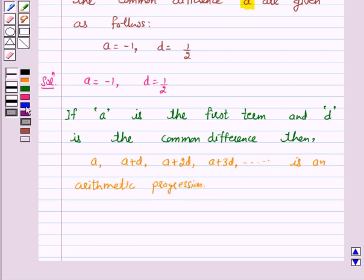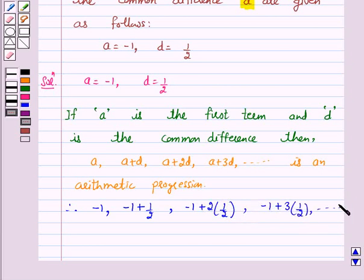Therefore, a = -1, -1 + d which is 1/2, -1 + 2 times d that is 1/2, -1 + 3 times 1/2, and so on is an arithmetic progression.